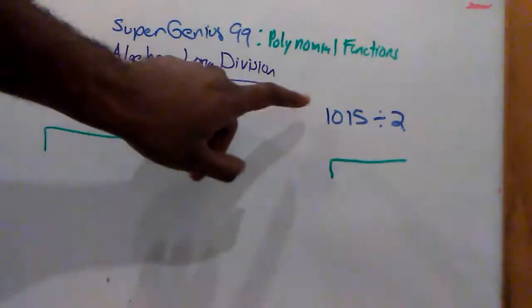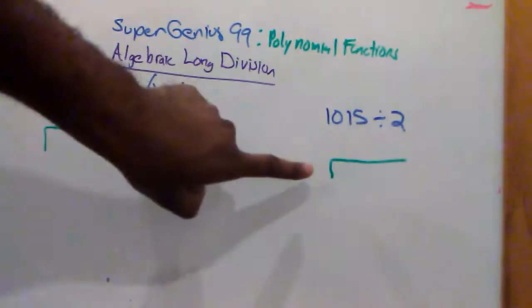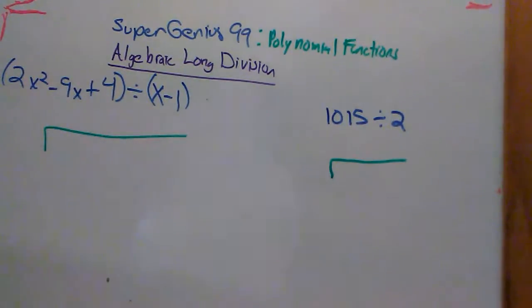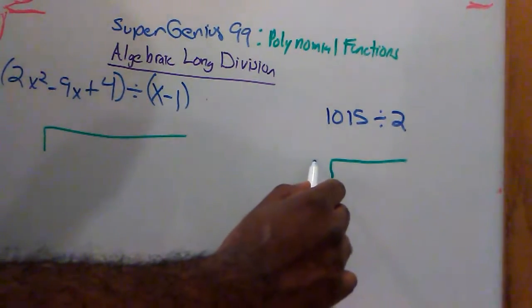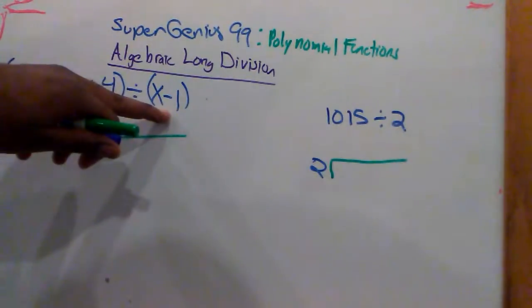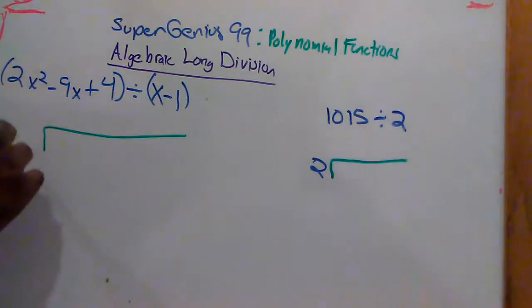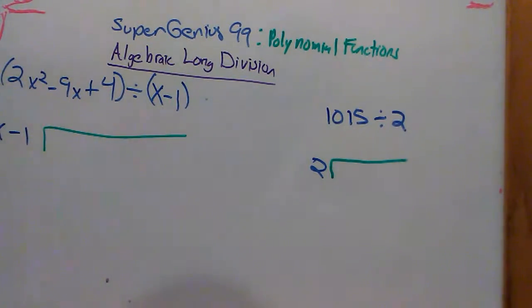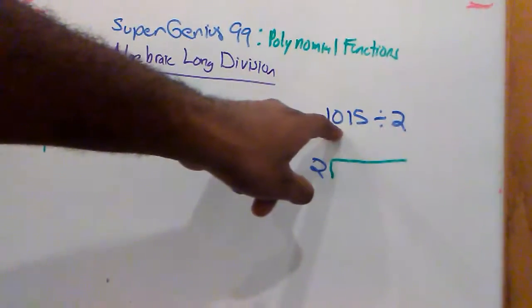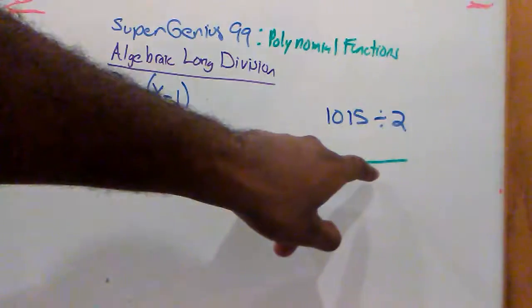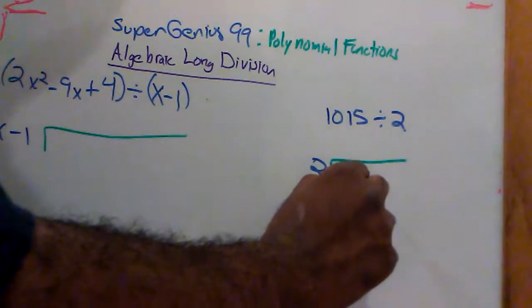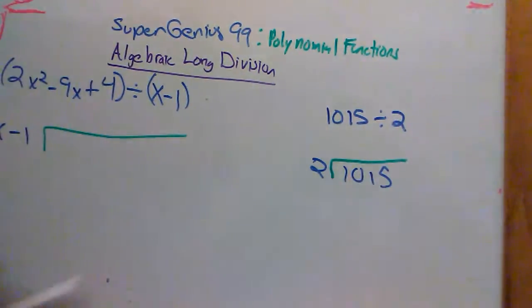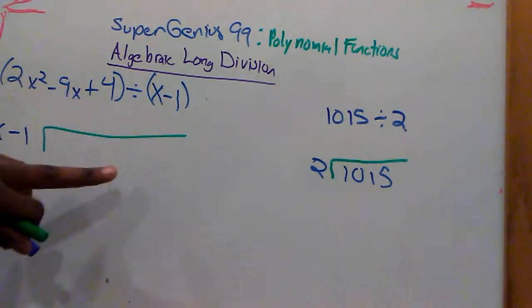When you're doing integer division, what number of these two numbers goes on the outside? It's the number in the second position, right? That same thing, this second number, is going to go in the same position. And the first number goes inside this division mechanism. So this first number is going to go inside this division mechanism.